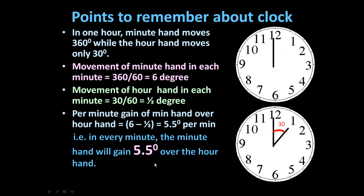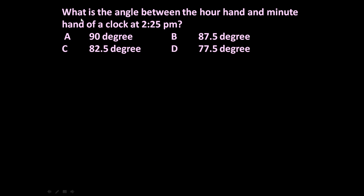Based on this concept, let us solve a problem. What is the angle between the hour hand and minute hand of a clock at 2:25 PM? The options are: A) 90 degrees, B) 87.5 degrees, C) 82.5 degrees, or D) 77.5 degrees. To answer this question, there are certain steps.